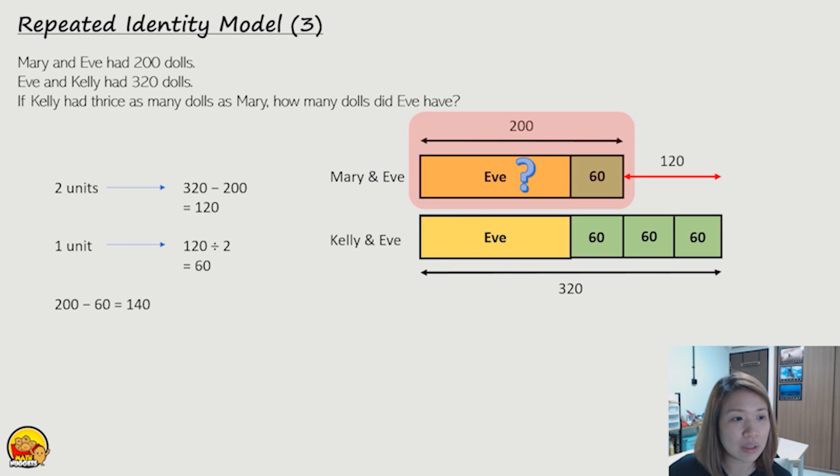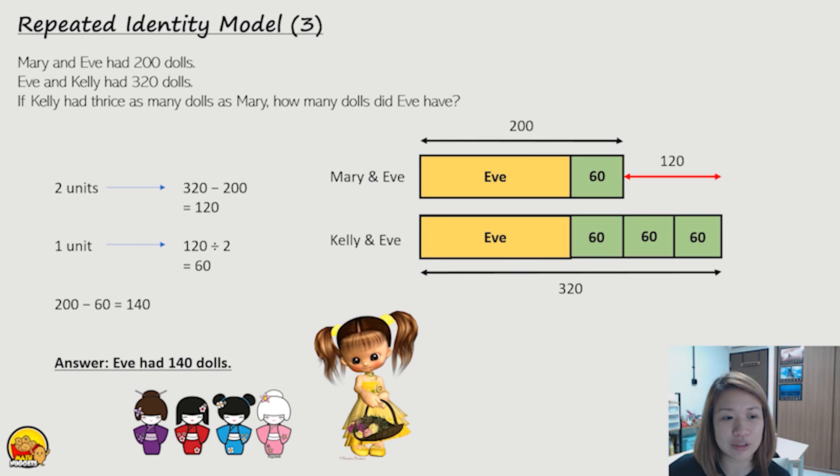Okay, so we take the total of Mary and Eve, 200, minus Mary, which we have found to be 60, we will get Eve, which is 140. So the answer would be Eve had 140 dolls.